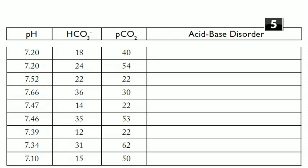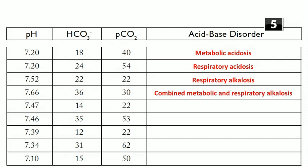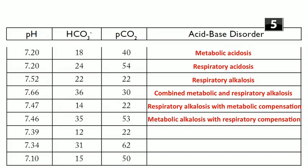Continuing with the ABG answers: pH 7.2, bicarb 18, PCO2 40 — metabolic acidosis without compensation. pH 7.2, bicarb 24, PCO2 54 — respiratory acidosis without compensation. pH 7.52 — respiratory alkalosis without compensation. pH 7.66 — combined metabolic and respiratory alkalosis. pH 7.47 — respiratory alkalosis with metabolic compensation. pH 7.46 — metabolic alkalosis with respiratory compensation. pH 7.39 — mixed metabolic acidosis and respiratory alkalosis (not just compensation, since pH is in the normal range).